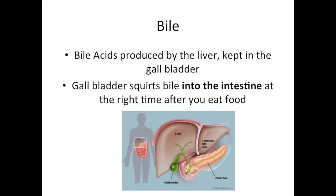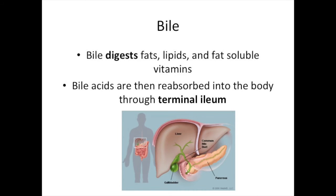Lastly, let's talk about bile acid diarrhea. Bile acids are produced by the liver and are kept in the gallbladder. The gallbladder then squirts bile into your intestine at the right time after you eat food. Bile is necessary for digesting fats, lipids, and fat-soluble vitamins such as vitamin D.